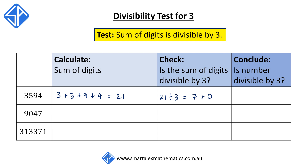21 divided by 3 is equal to 7 with a remainder of 0. Since the remainder is 0, this tells us the sum of the digits is divisible by 3, and therefore the number 3594 is divisible by 3.